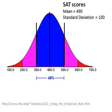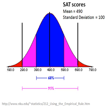What about when we're talking about two standard deviations away from the mean? Well, 95% of the population is within two standard deviations of the mean. Our mean is 490. 690 is two standard deviations above the mean, and 290 is two standard deviations below the mean. So we can say that 95% of the population is between a verbal SAT score of 290 and a verbal SAT score of 690.